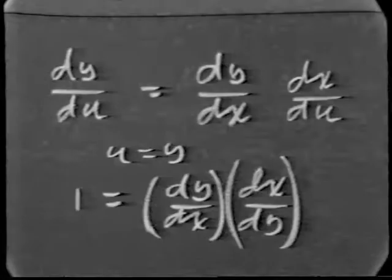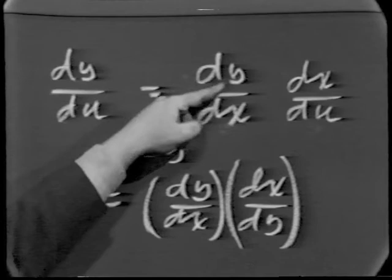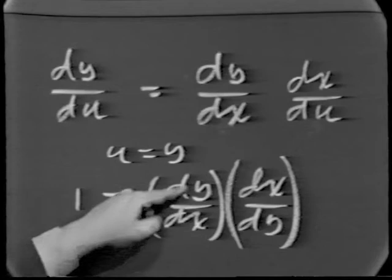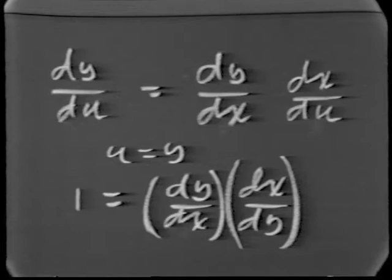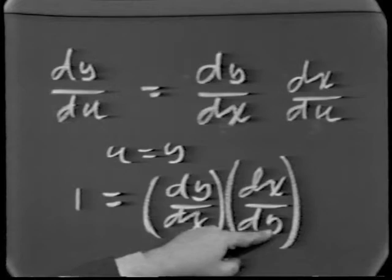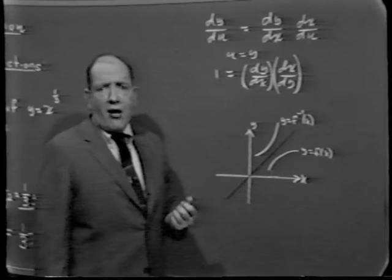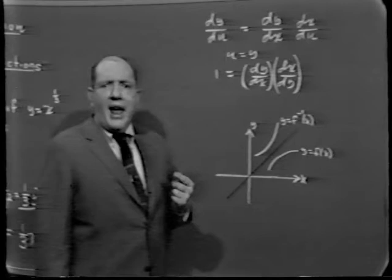The one logical hang-up is this: the chain rule required not just that y be a function of x, but that y be a differentiable function of x, and that x be a differentiable function of u. So if y is differentiable and has an inverse function, we also need to know that the inverse function is differentiable. The missing piece is: we do not yet know that the inverse of a differentiable function is also differentiable.